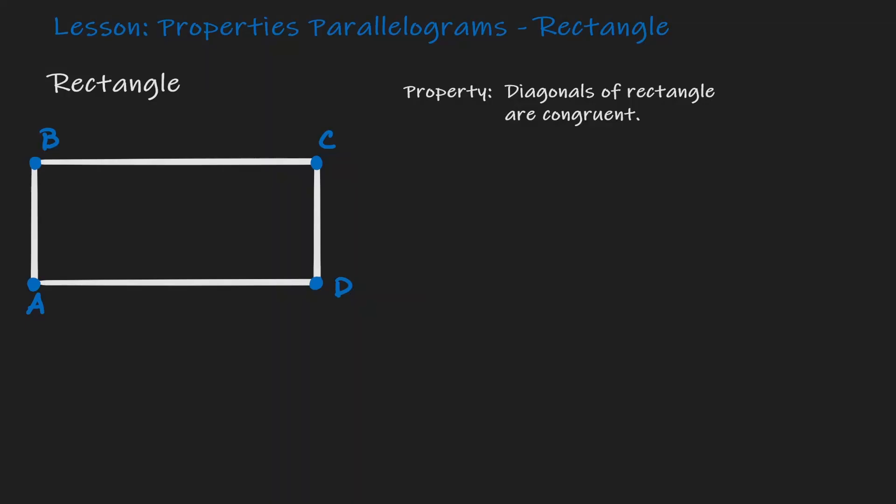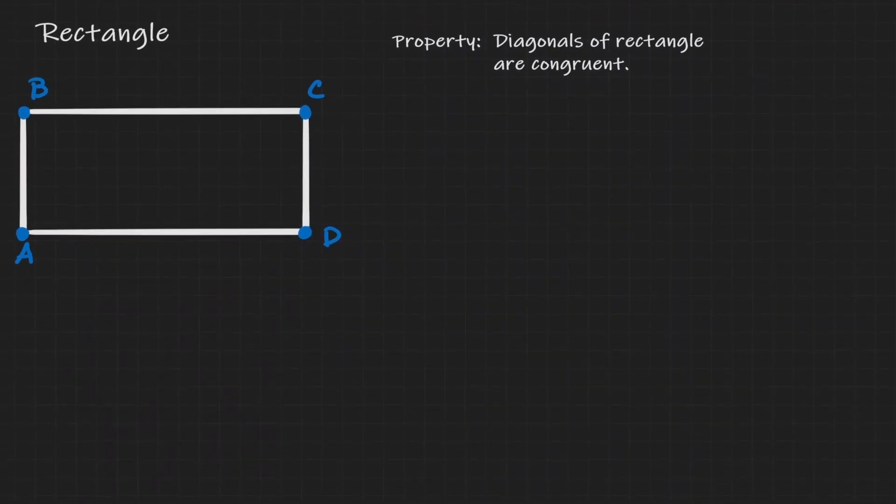Welcome. Today we will be discussing properties of parallelograms, and we are going to concentrate on rectangles. So let's take a look at the first property that we have here. We want to show that diagonals in a rectangle are congruent. Let's start with the figure that we are working with — a rectangle.